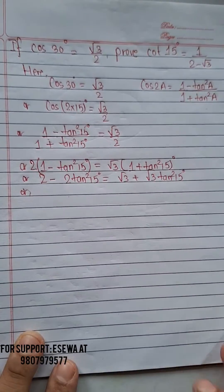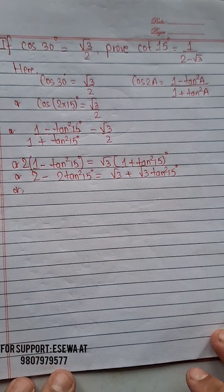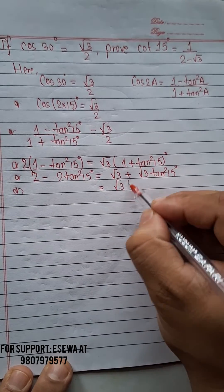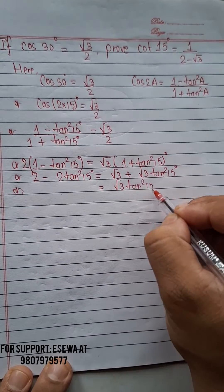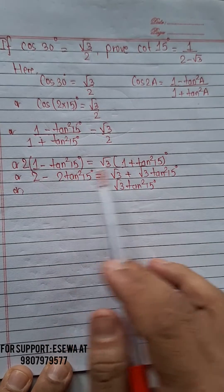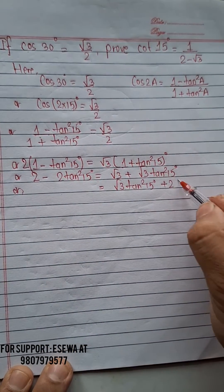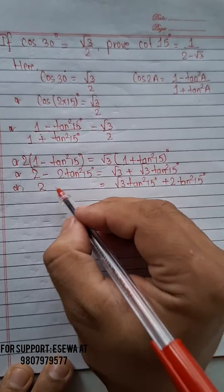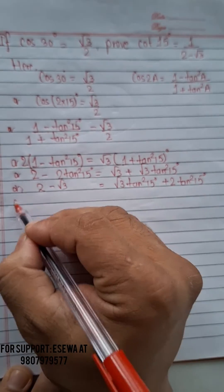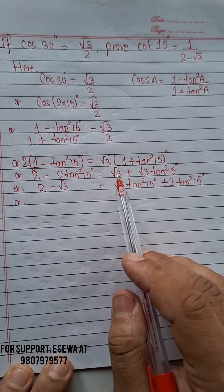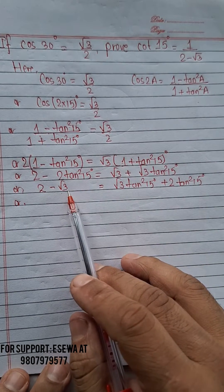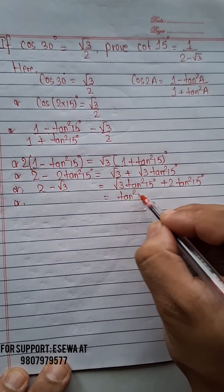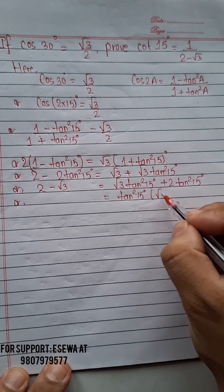Now we group like terms on one side. We move 2·tan²15° to the left and -√3 to the left as well. So we get 2 - √3 = √3·tan²15° + 2·tan²15°, which means 2 - √3 = tan²15°·(√3 + 2).